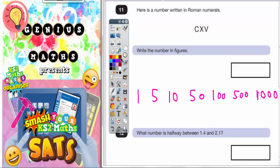Question 11. Here is a number written in Roman numerals. We've got to write the number in figures. We've got to take this number CXV and figure out what it means.